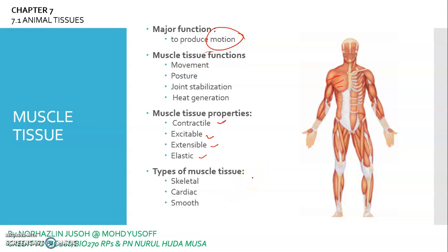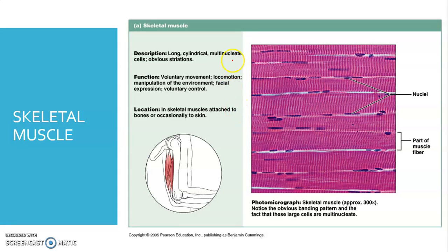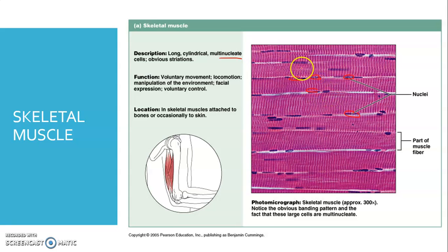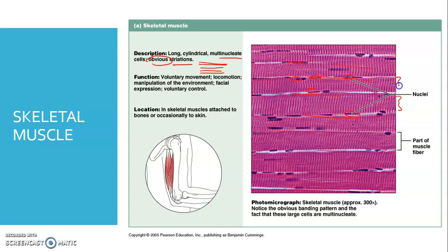First, the skeletal muscle. It can be described as long and cylindrical, and multinucleated — meaning it has many nuclei. You can see many nuclei along the cylindrical skeletal muscle cell. It is also obviously striated. You can see the striations here — this is one striation, this is one striation — and so on. So it is clearly striated.